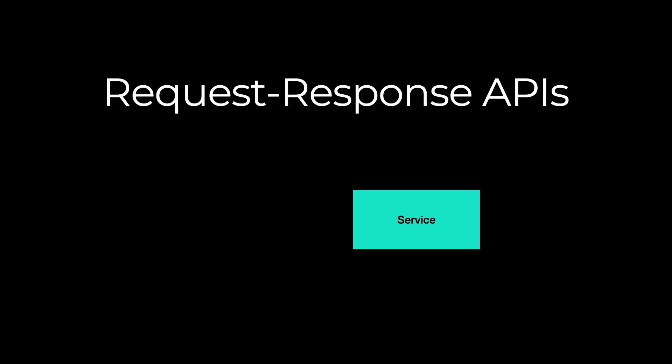But first, let's talk about why we are discussing GraphQL, REST, and gRPC. In this video, we'll focus on request-response APIs — APIs where a server has a client that can perform a request and receive a response. For that case, gRPC, REST, and GraphQL tend to be at the top of the list. Which raises the question: which one is better? And honestly, as always, it depends — but you will see in this video what it depends on.